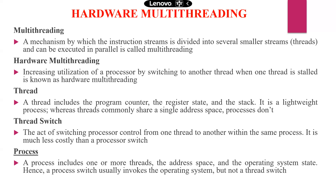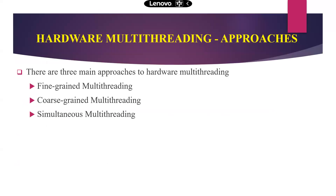When we have a more number of threads, the control switches from one thread to another thread — that is called thread switching. A thread is also called a lightweight process. A process includes one or more threads, the address space, and the operating system state. Hence, a process switch usually invokes the operating system, but not a thread switch.